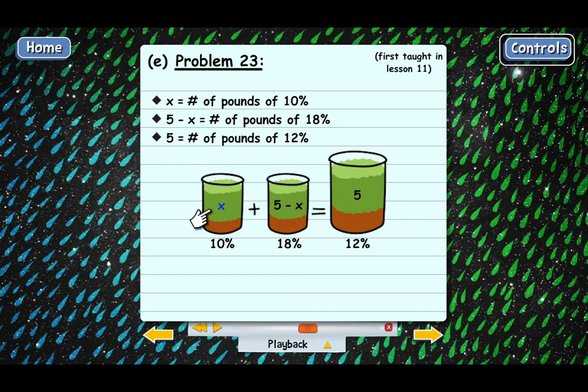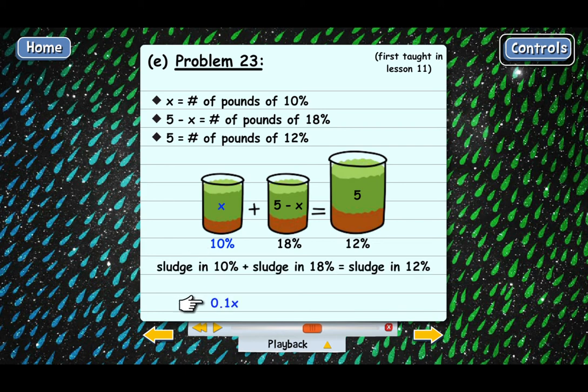See, there are X pounds in this big thing here, but then 10% of it is caramel sludge. And so the amount of caramel sludge in the first one is going to be 10% of X, or 0.1X. See, I wrote in the amount of sludge in the 10% plus the amount of sludge in the 18% equals the amount of sludge in the 12%, which is the combined thing. And then this is 0.1X.